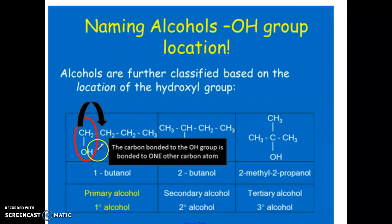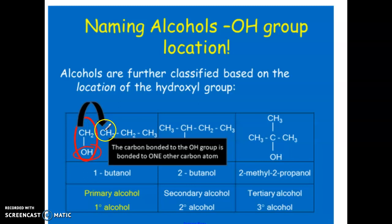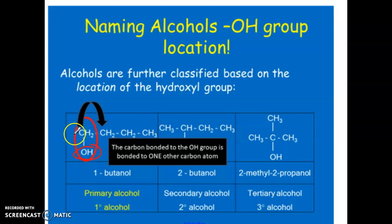A primary alcohol is one where you have the OH group on a carbon that has only one other carbon attached, or you can think of it as the OH group being on a carbon that has two other hydrogens on it. Typically, that's at the very end or beginning of a chain.